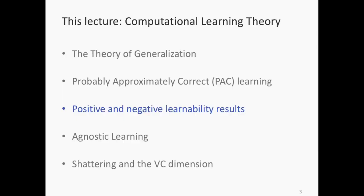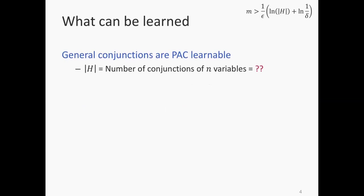I'm going to present some positive and negative learnability results that we can directly get from this definition of Occam's razor, and then we'll see other Occam's razors later. In particular, the first class of functions we'll consider — and this is also the answer to the question on Zoom about how we know the size of h — we consider classes of functions. The first class we'll consider is the set of all possible conjunctions.